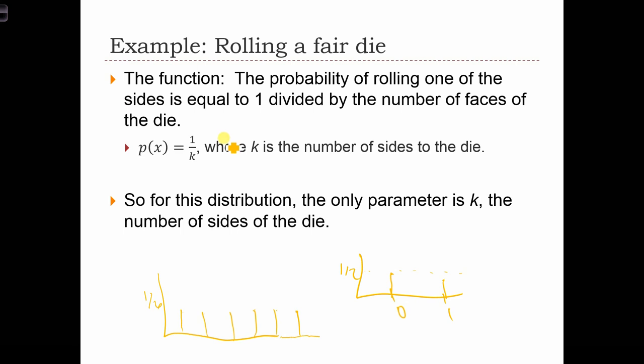Now, in the case of the die, we're going to say that k is a parameter of the probability function, because the shape of the function is going to depend on how many sides the die has. So in this case, when k equals 6, we have a probability distribution that looks like this. And when k equals 2, which is essentially the same thing as flipping a coin, we have a probability distribution that looks like that.